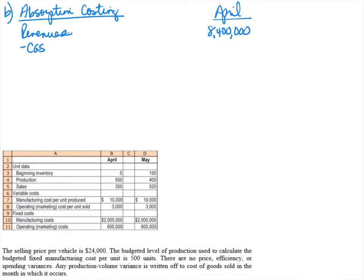Fixed manufacturing costs are $2,000,000. Under absorption costing, this gets absorbed into cost of goods sold based on units produced — 500 units. We then multiply by the number of units sold (350) for cost of goods sold. Adding variable manufacturing costs of $10,000 times 350 units sold gives a total cost of goods sold of $4,900,000.